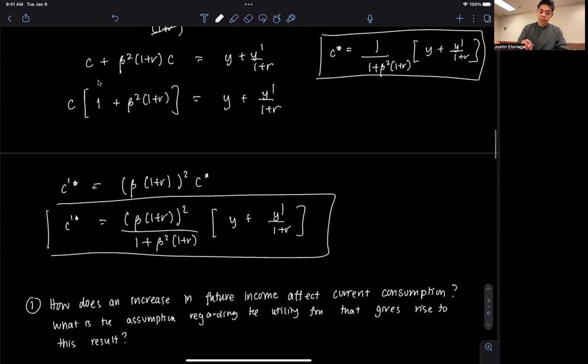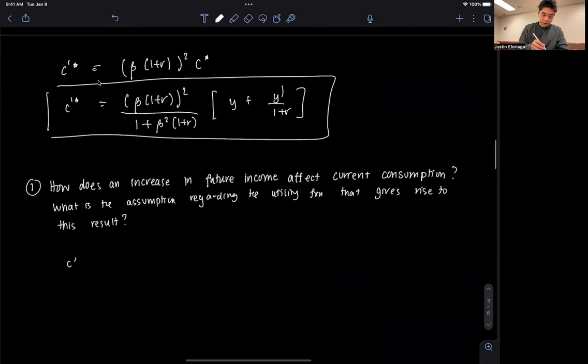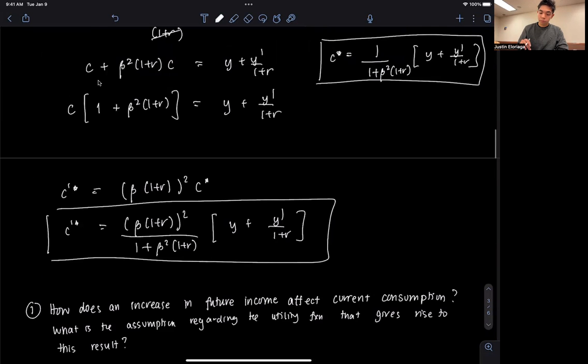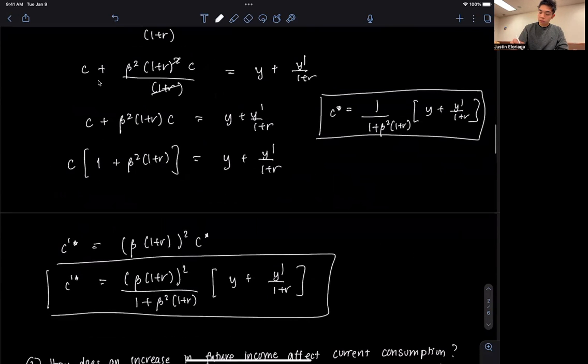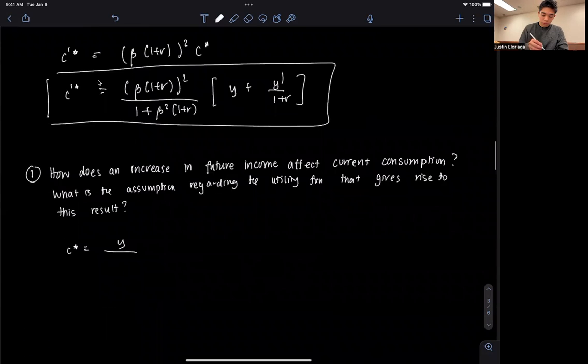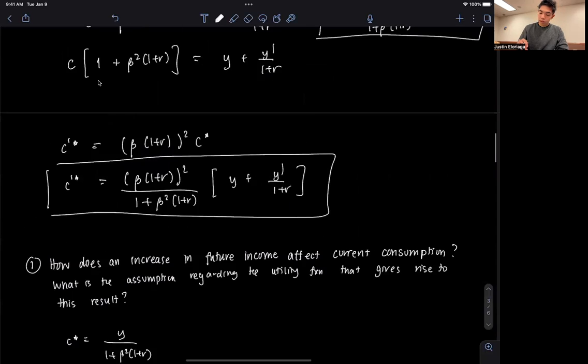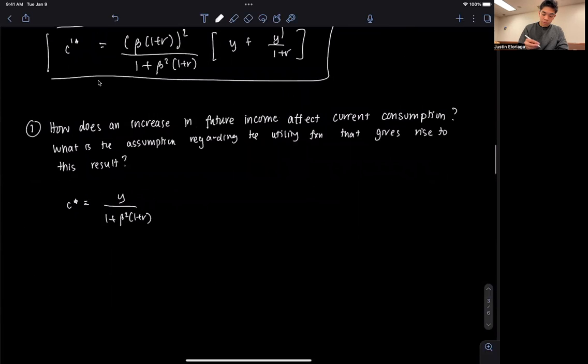So, just to recap, we got that C star is equal to y over 1 plus beta squared times 1 plus r, plus y prime over 1 plus beta squared times 1 plus r.